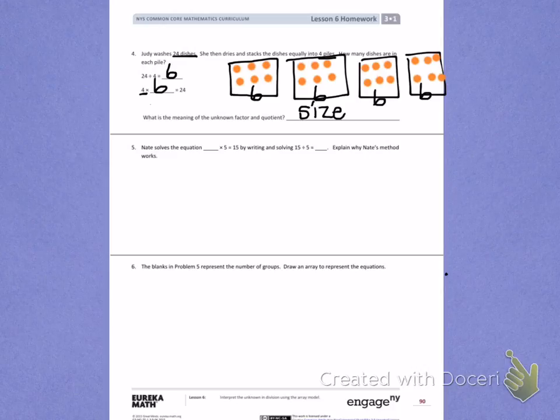Number 5. Nate solves the equation blank times 5 equals 15 by writing and solving 15 divided by 5 equals blank. Explain why Nate's method works. Nate knows that multiplication and division are related. So when he writes multiplication as division, he is solving for the unknown, which happens to be the quotient.